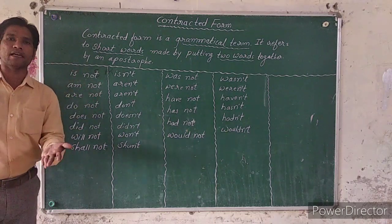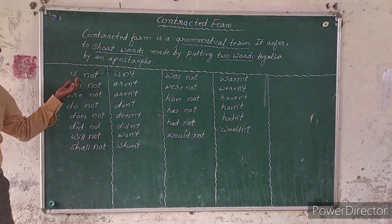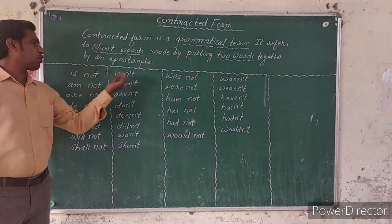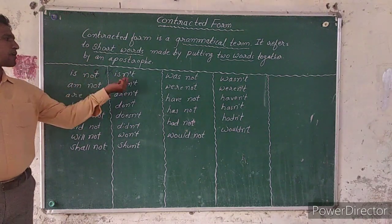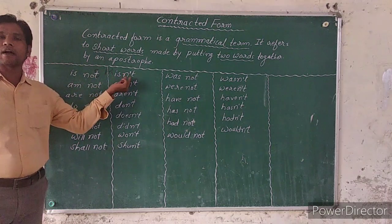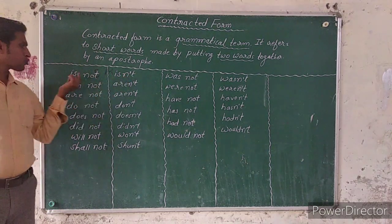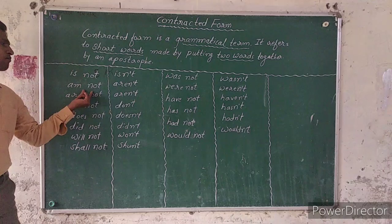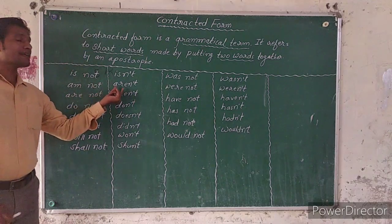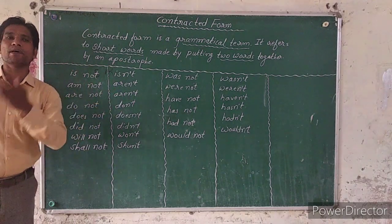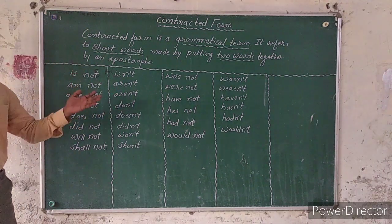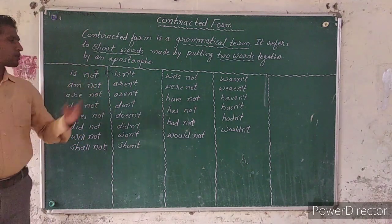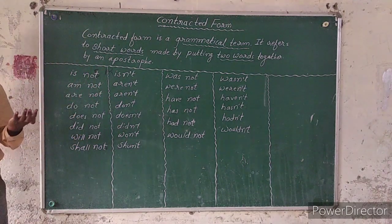When we have some spelling, we can omit and remove some letters. For example, 'is not' becomes 'isn't'. Similarly, 'would not' becomes 'wouldn't'. This is how the contracted form is made.